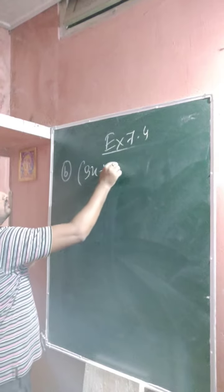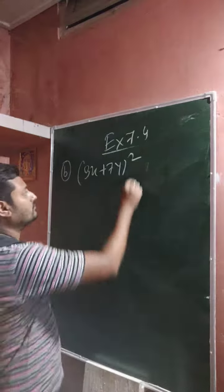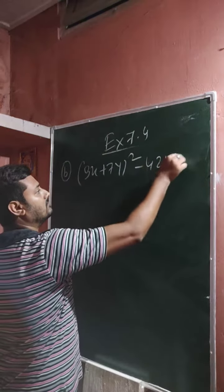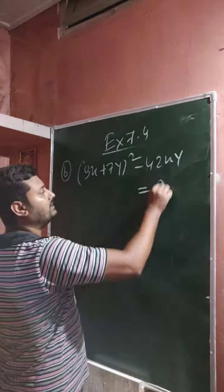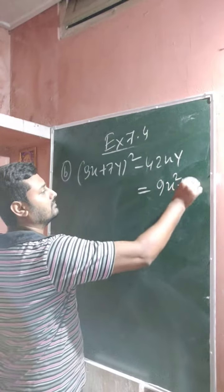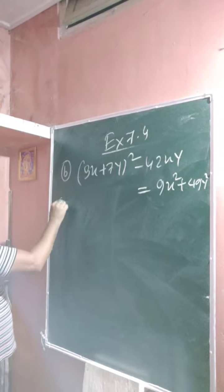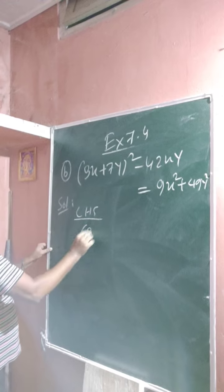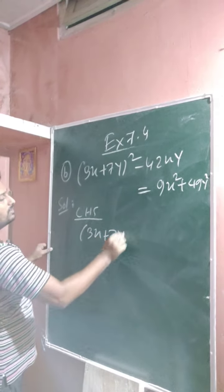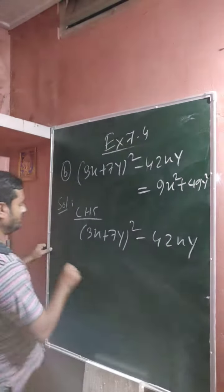3x plus 7y all square minus 42xy. 9x square plus 49y square. Again solution comes from the left hand side which is 3x plus 7y all square minus 42xy.